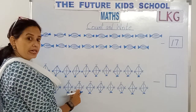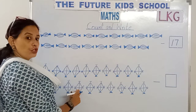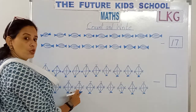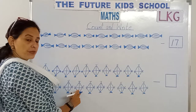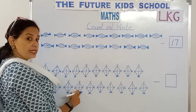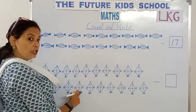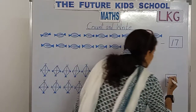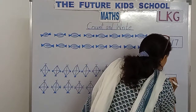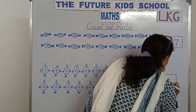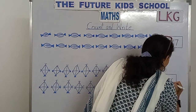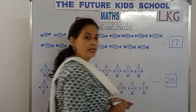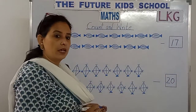20 kites. 2 and 0, 20. Let's write the number 20 in this box — 2 and 0, 20.